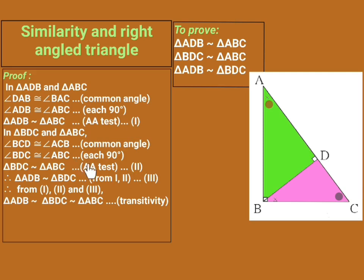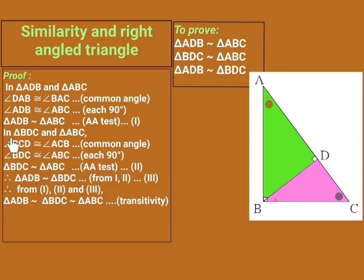Now look at statement one and statement two. From statement one, triangle ADB is similar to triangle ABC. From statement two, triangle ABC is similar to triangle BDC. Since the first triangle is similar to the second, and the second is similar to the third, by the transitivity property, triangle ADB is similar to triangle BDC. Hence from one and two, using the transitivity property, triangle ADB is similar to triangle BDC. This is statement number three.